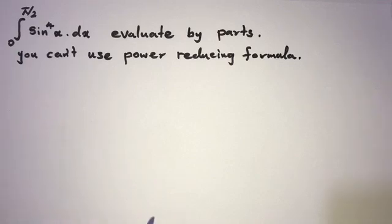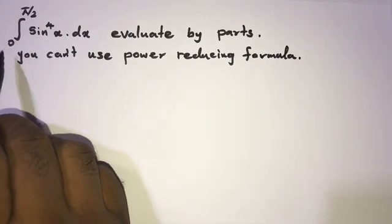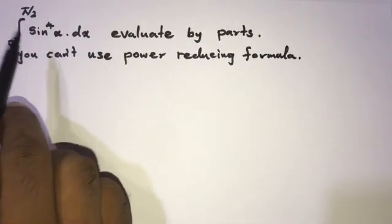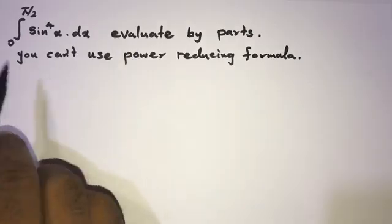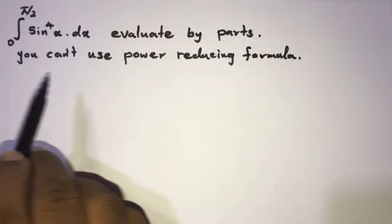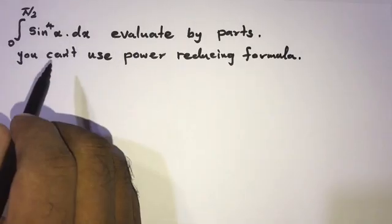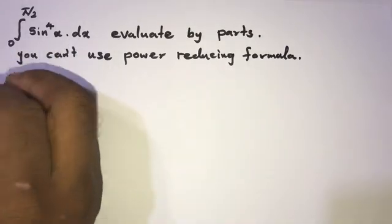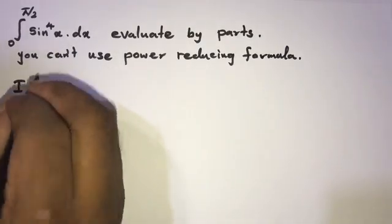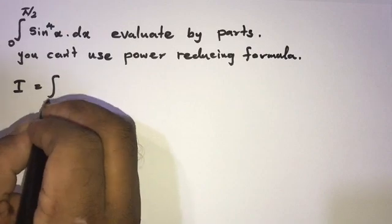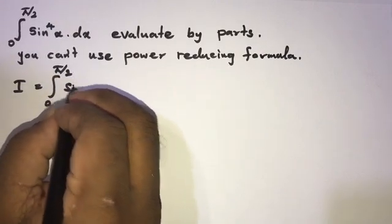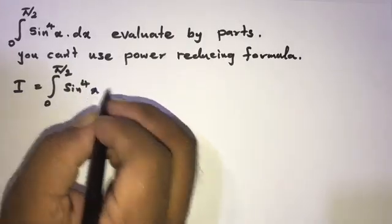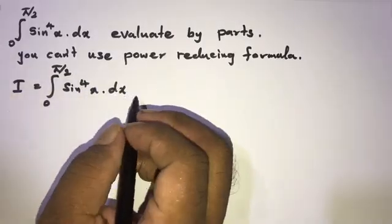Welcome to the Mathematics My Channel. Today we are going to solve this integral problem: from 0 to 5π/2, sine to the fourth power x dx. We evaluate by parts and we have the condition that we can't use the power reducing formula. Take this integral equal to I, so we can write I is equal to the integral from 0 to 5π/2 of sine to the fourth power of x dx.